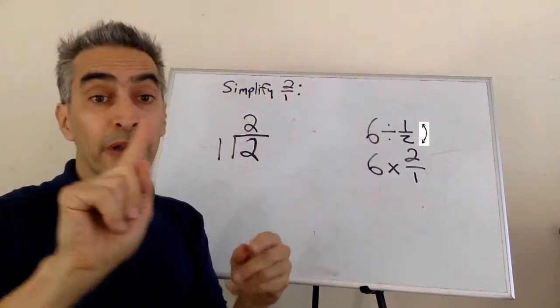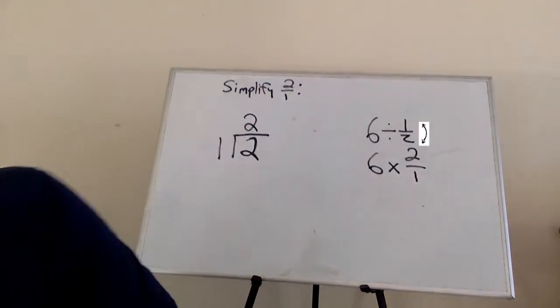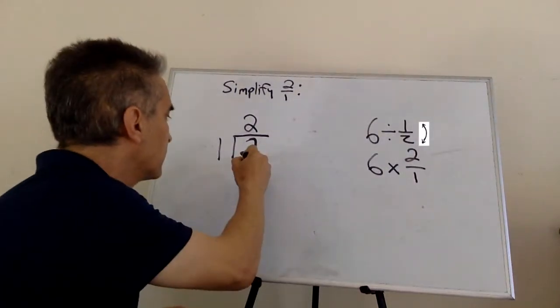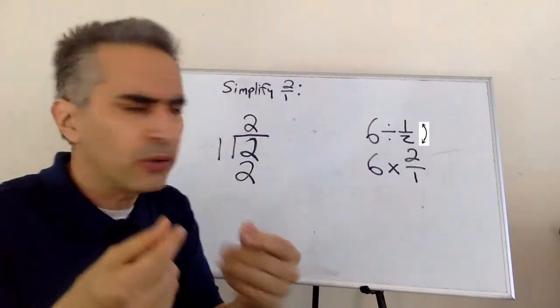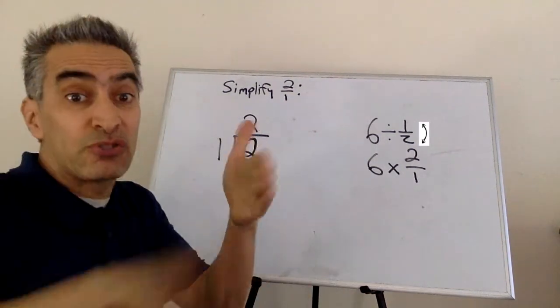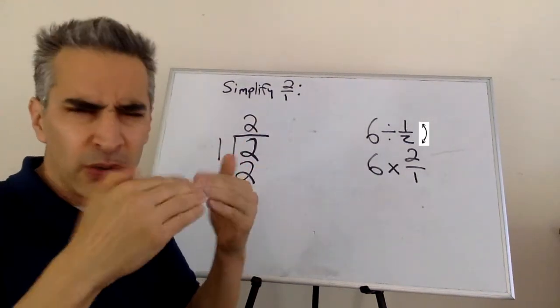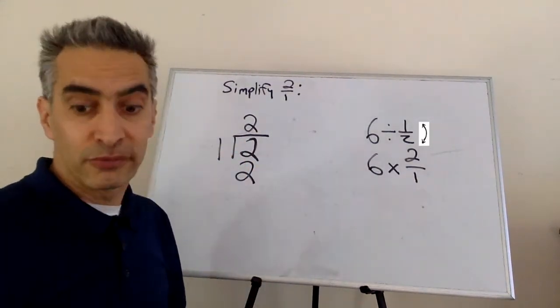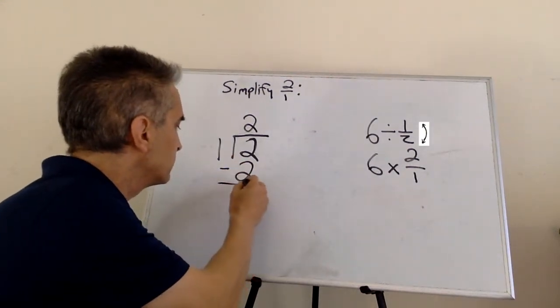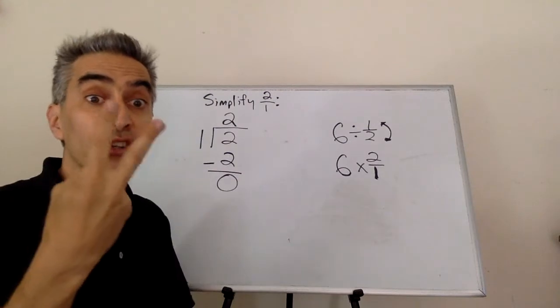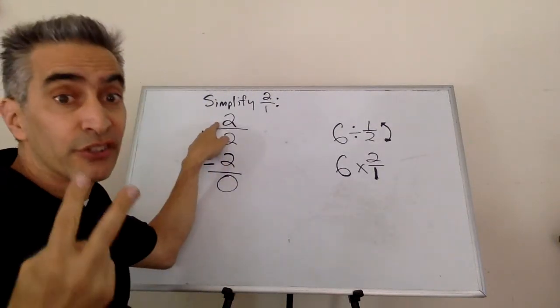Now we multiply one times two and that equals two. Next, what are we going to do? Subtract. Two minus two equals zero. Two divided by one equals two.